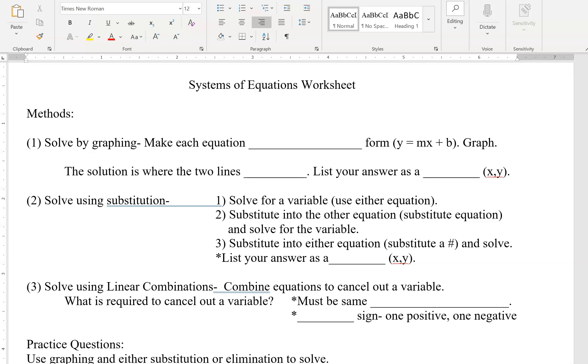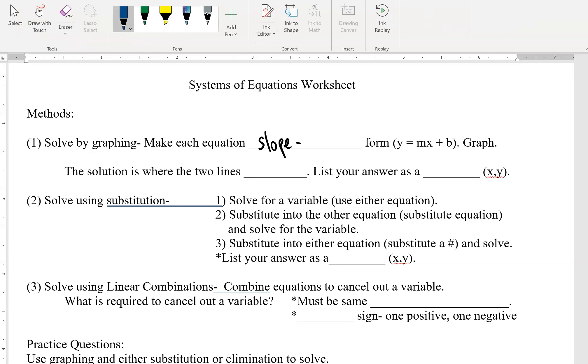First one is solving by graphing. These aren't all going to be ready to graph, so if we are going to graph them we have to put them in our slope intercept form. So that's that y equals mx plus b. We graph it.